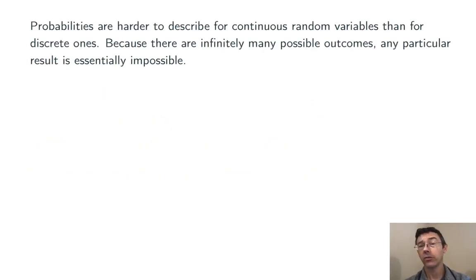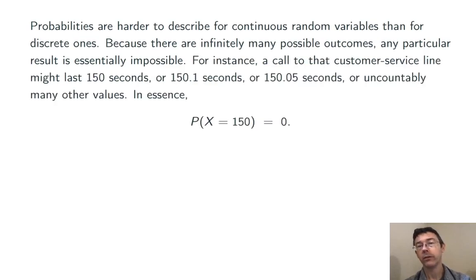Probabilities are harder to describe for continuous random variables than for discrete ones. There are infinitely many possible outcomes for a continuous random variable, and so any individual result is essentially impossible. For instance, consider a call to that customer service line. We might say that it lasts 150 seconds. But the actual length, if we measured it more accurately, might be 150.1, or 150.05, or any one of uncountably many other values. So, the probability that the call length is actually exactly 150 seconds is essentially 0.